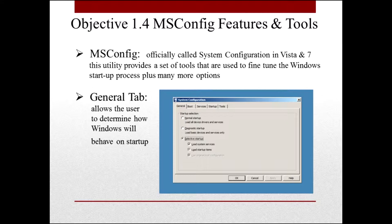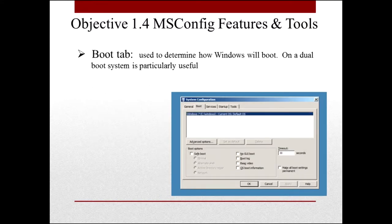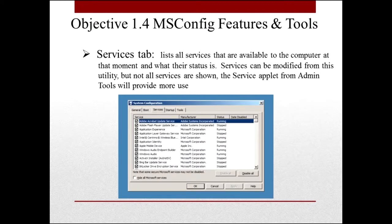The General tab is the first tab you'll see and allows the user to determine how Windows will behave on startup. Then there's the Boot tab. If you're running a dual boot system, you'll see more than one operating system here, and you can tell Windows how to boot from here on out. If not, you're only going to see one operating system there.